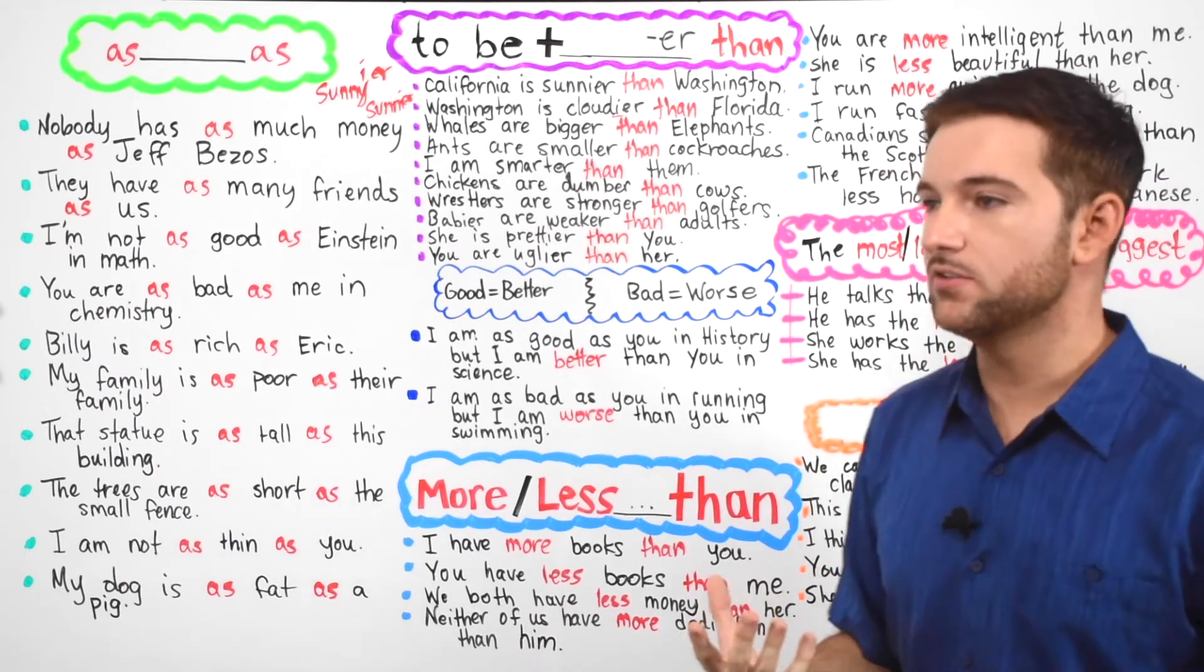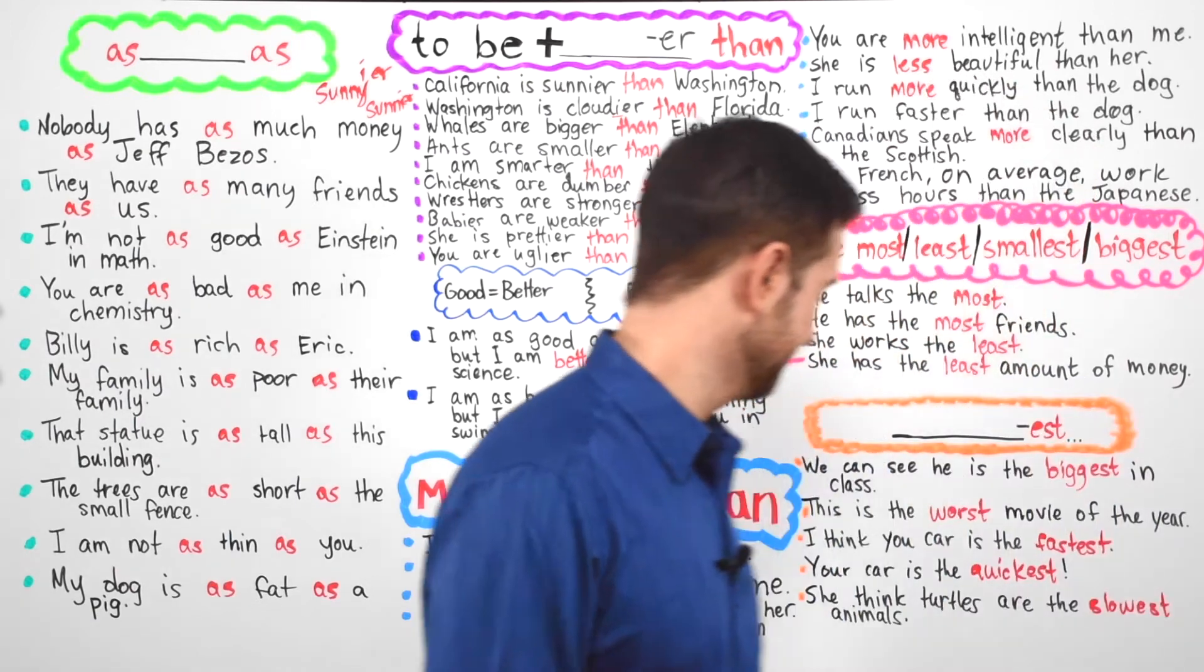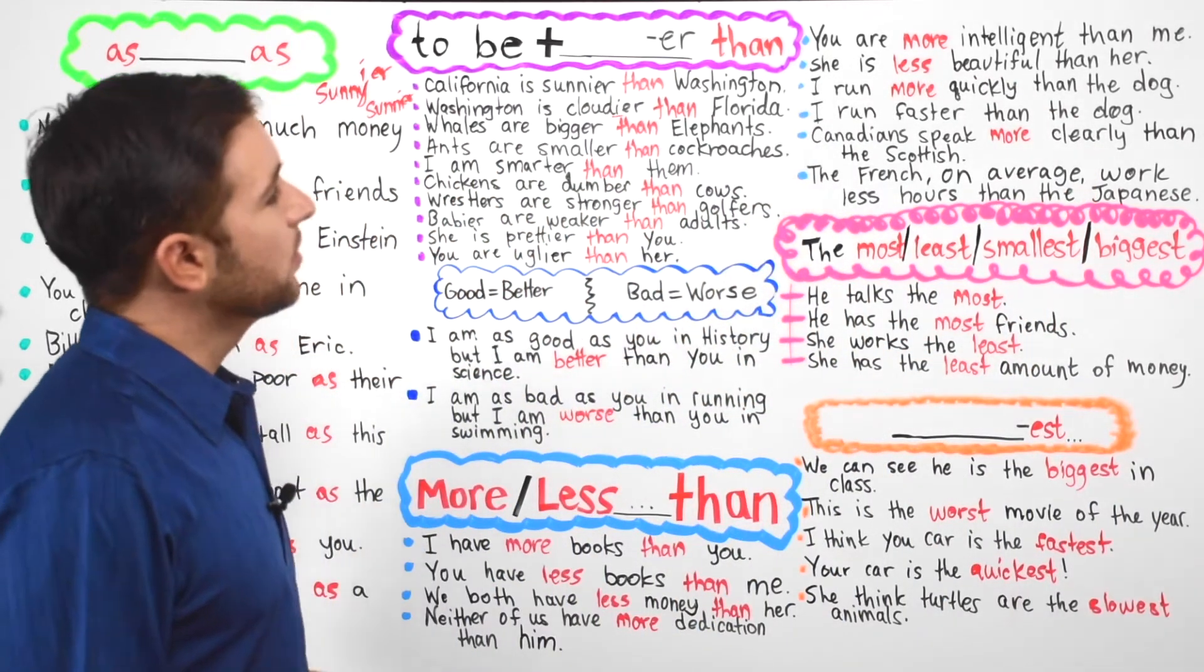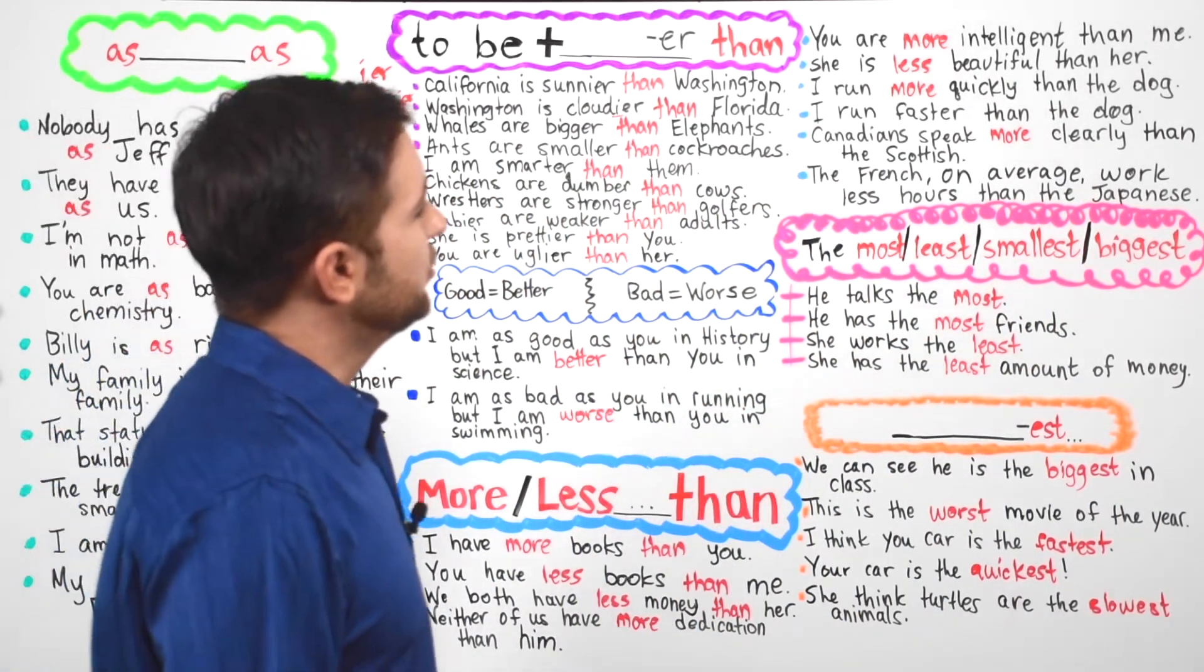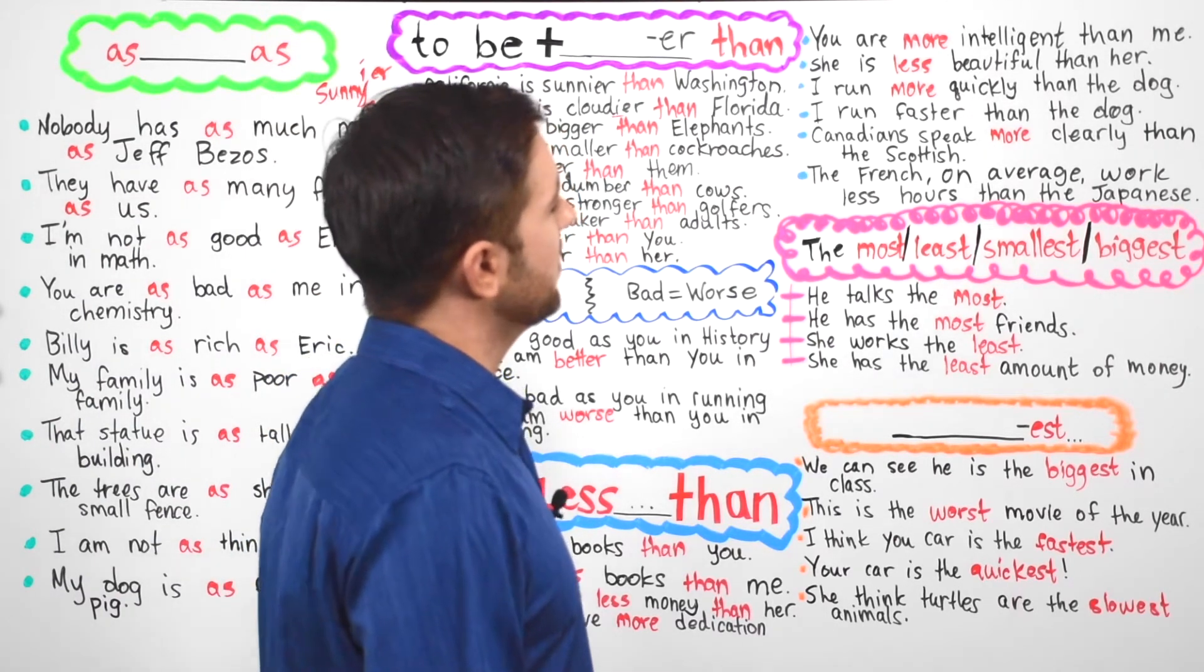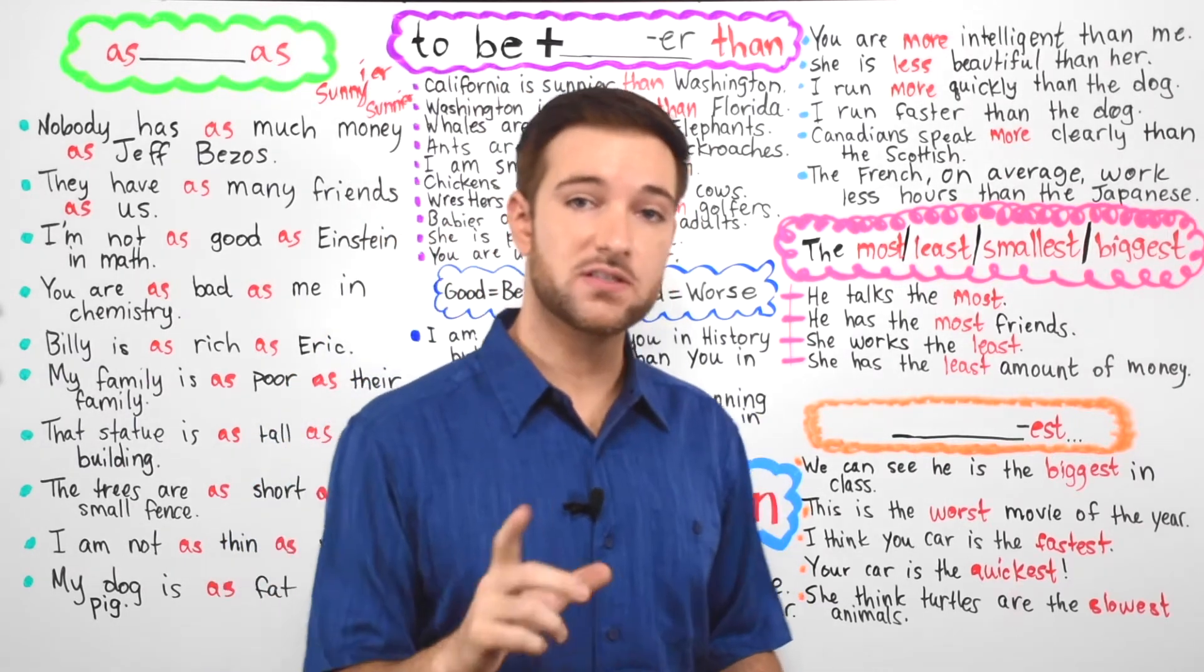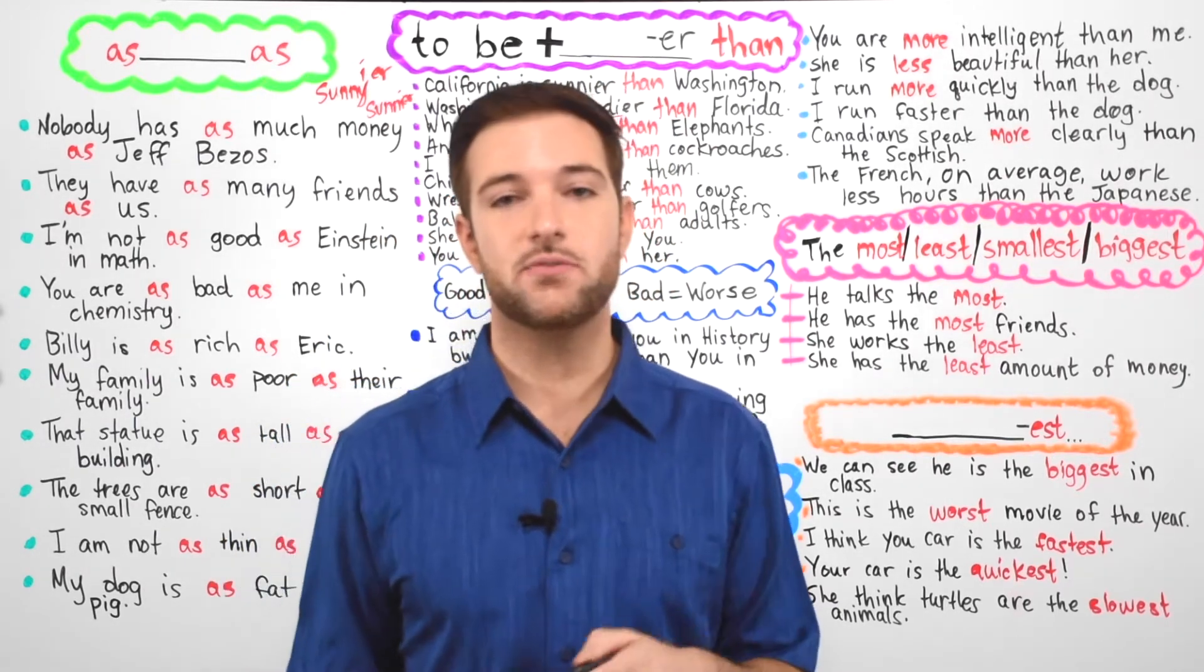Neither of us have more dedication than him. Dedication is something that you're committed to. You want to do, like learning English. You have to have a lot of dedication. You are more intelligent than me. She is less beautiful than her. I run more quickly than the dog. I run faster than the dog.